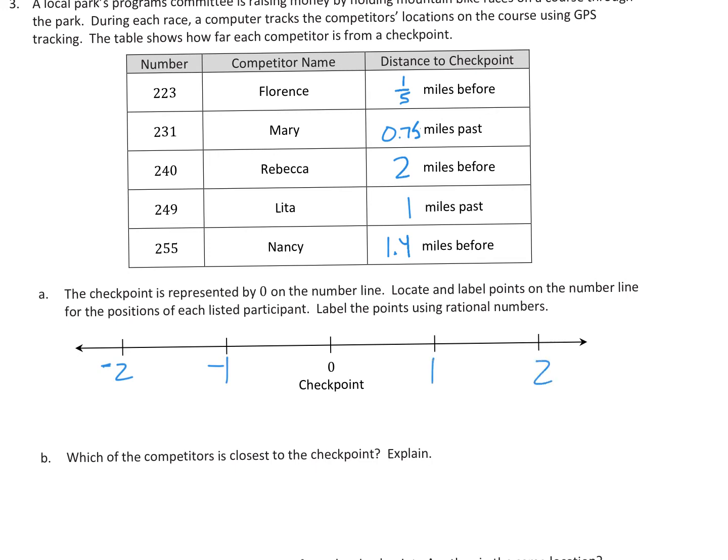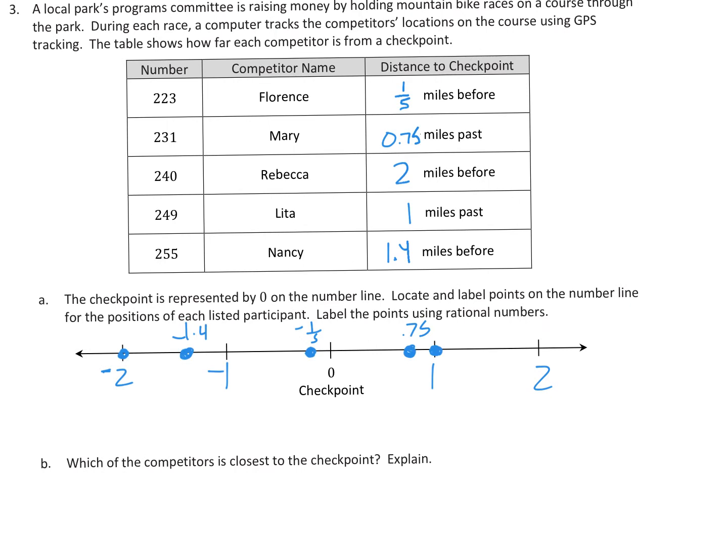And so now I can go and identify, okay, this one says before. So what is one fifth before? Well, if this is negative, that's going to be negative one fifth, because it's before. So where would negative one fifth go? It'd be over here. And so I need to split my one into five pieces and put it at the first piece. So I'm going to go ahead and put all those points down and label them. So here you can see, I have them all posted. Now negative one fifth is here because it's before, 75 hundredths past is before the one right there.